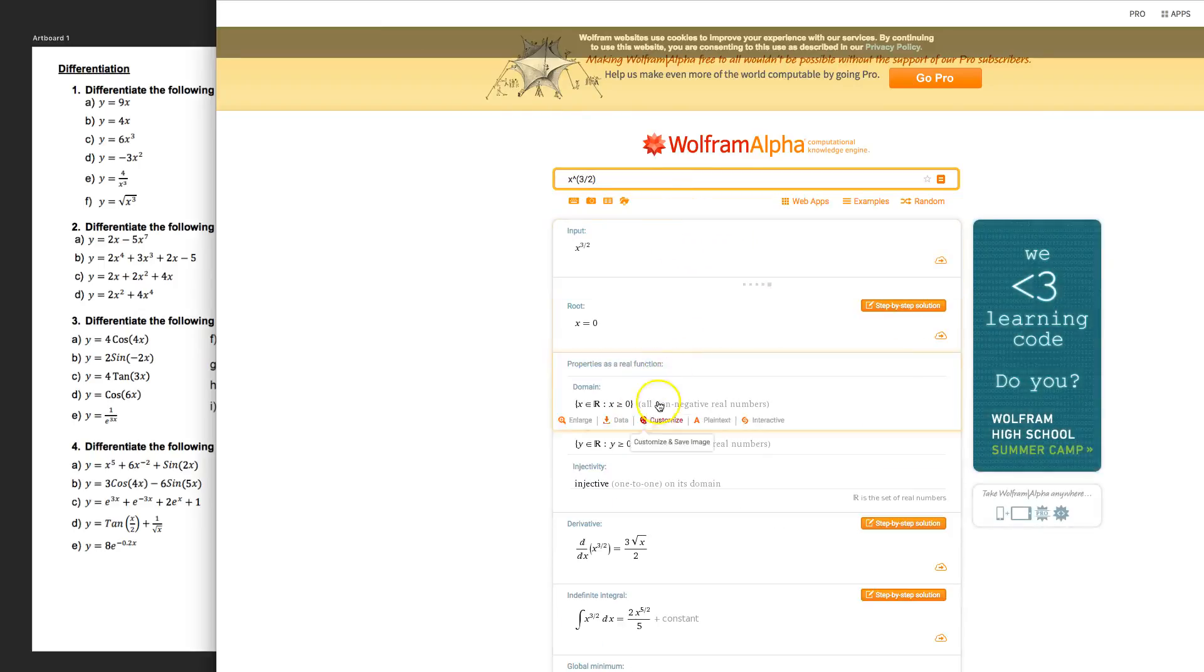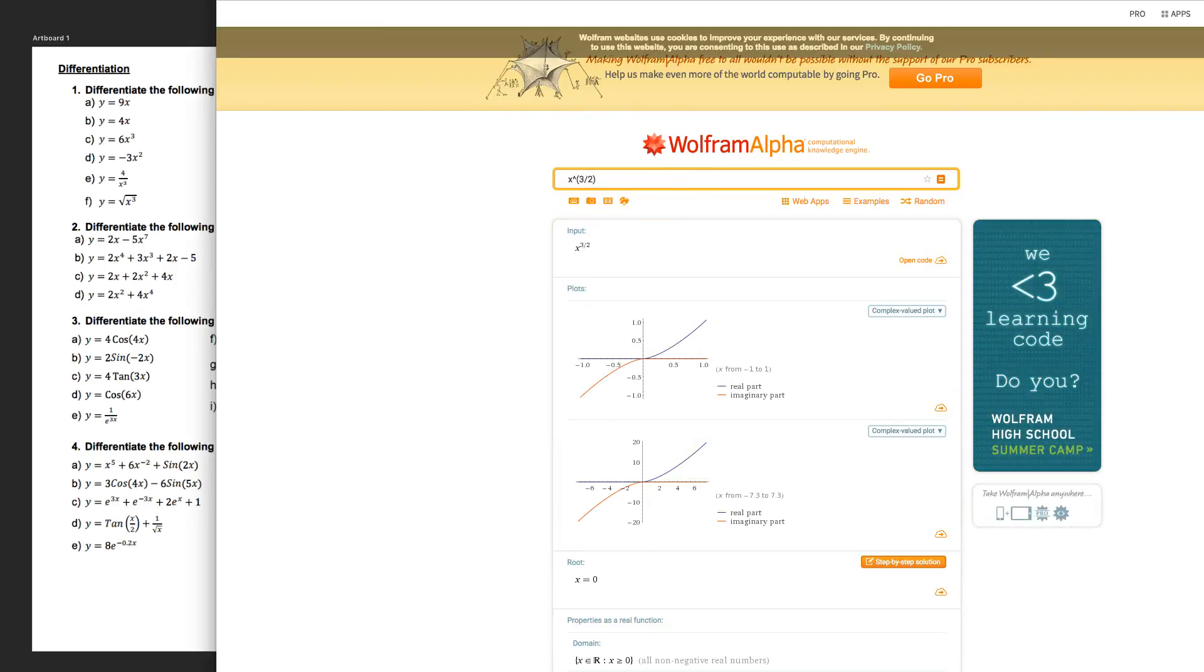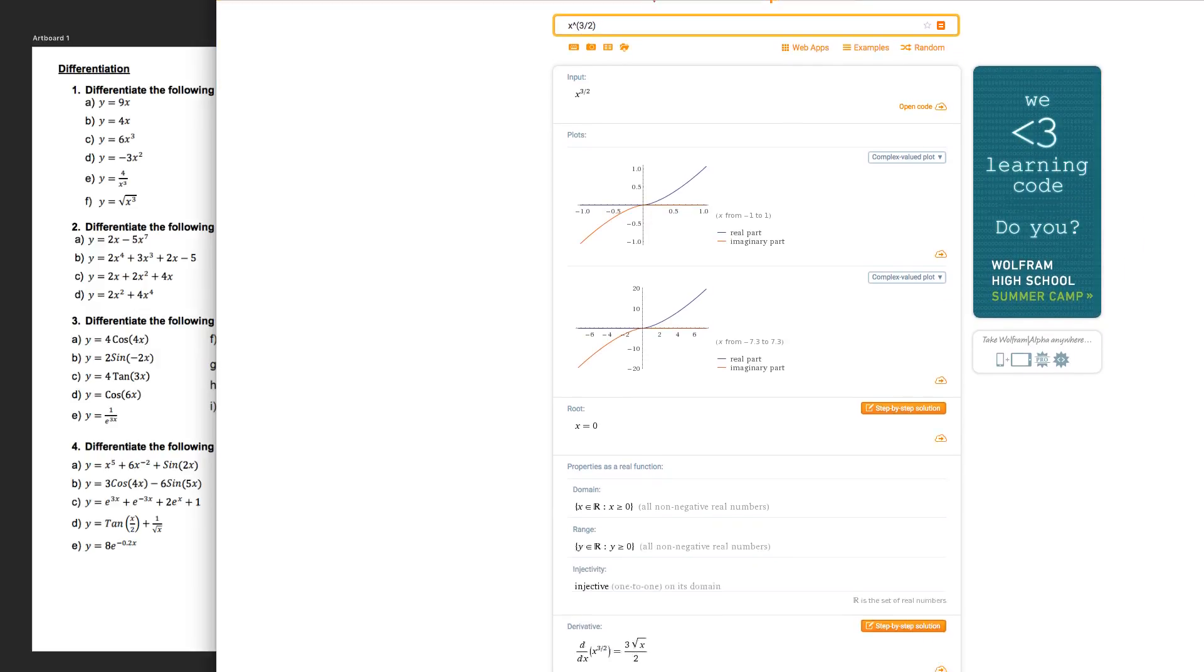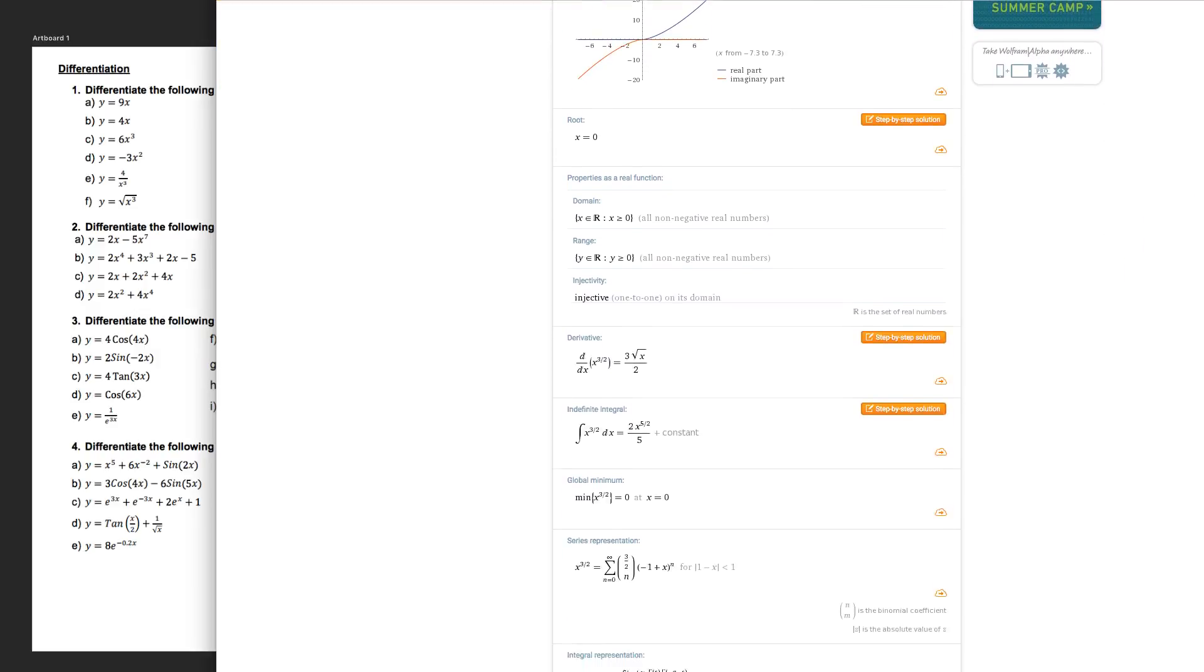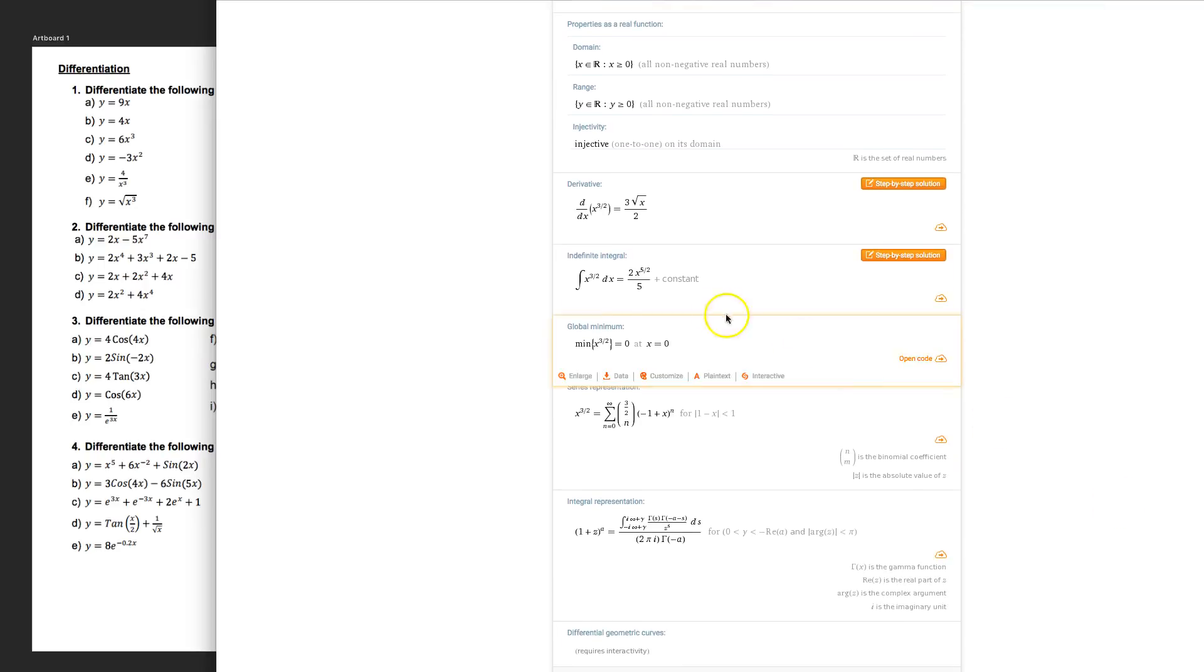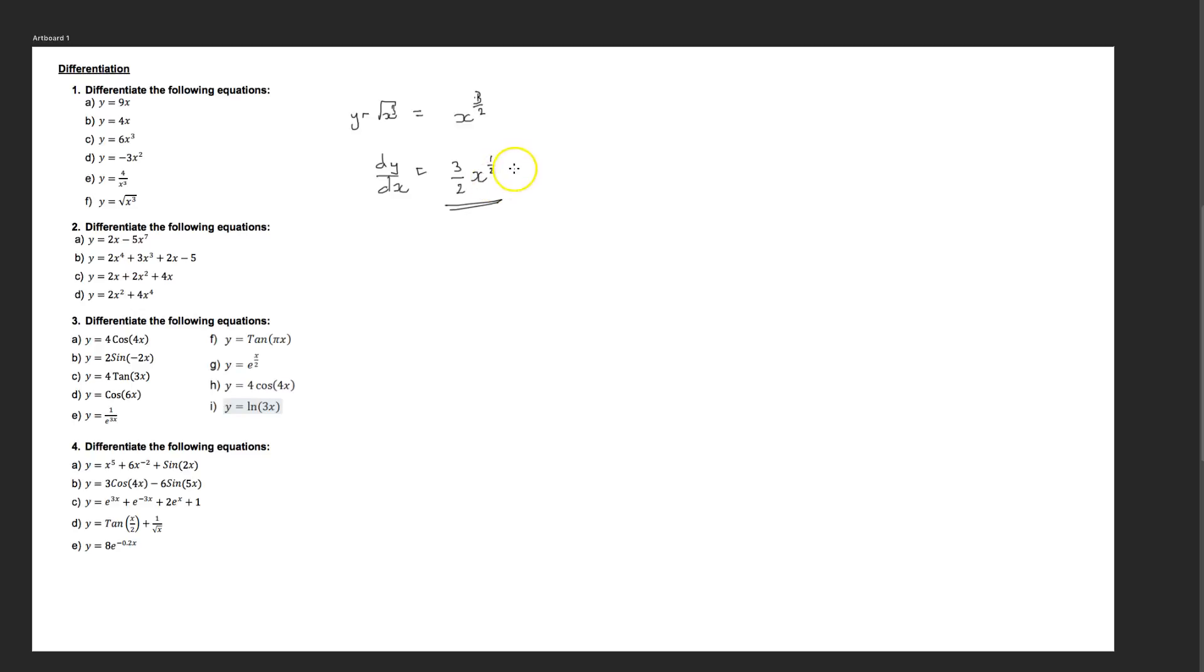And it'll crunch it. It'll give us a graph. It'll give it in a few different formats as well. And it'll show us that the derivative of this is 3 root x over 2. We could write this as 3x to the half over 2, or we could also write this as 3 root x over 2.